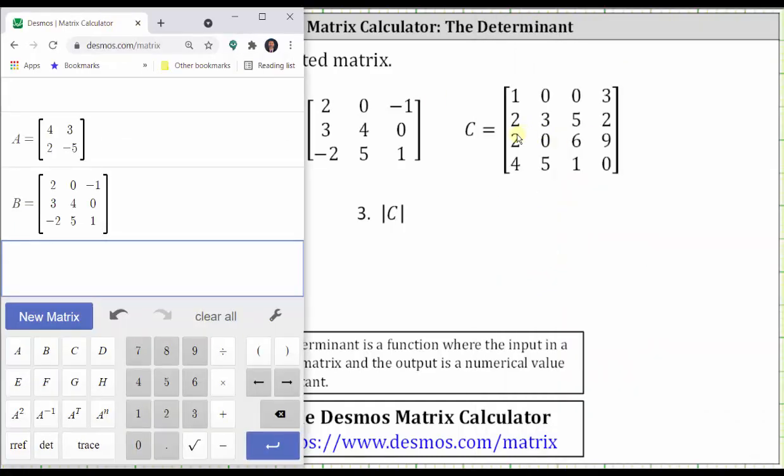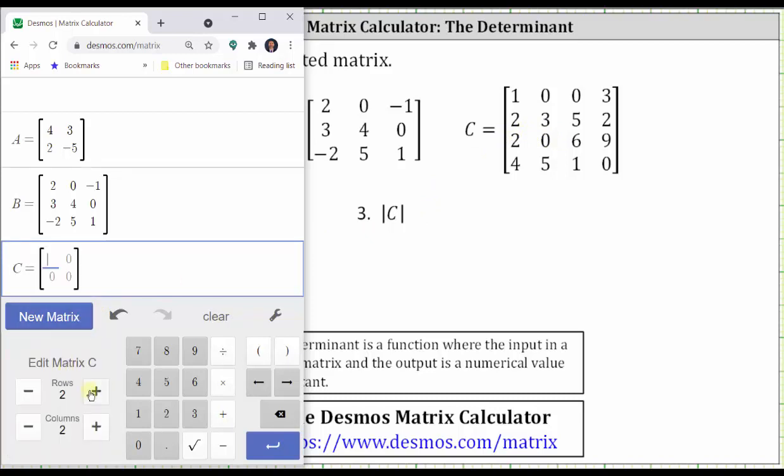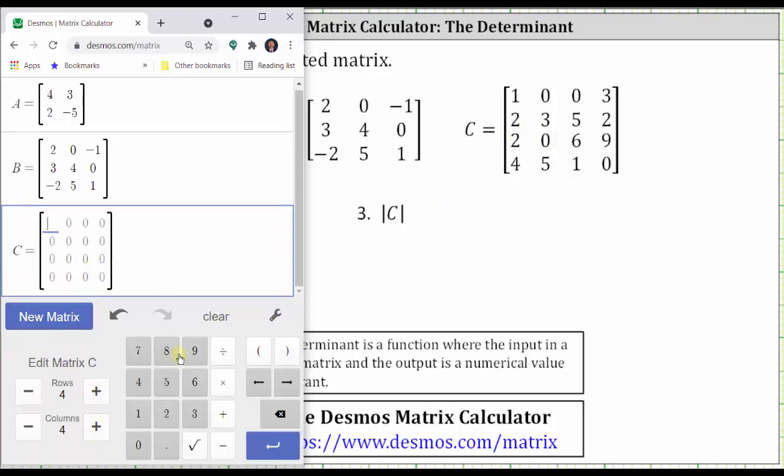And now let's enter matrix C, which is a four by four matrix. Click new matrix, change the dimensions below, and enter the elements. And it's worth double checking all of the entries. Press enter.